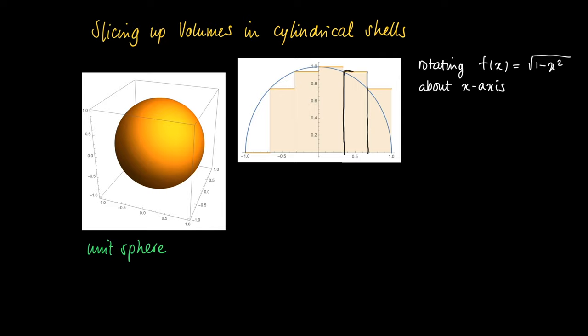We cut up the interval minus 1, 1 in equal pieces. So here we have 2, 4, 6 pieces. So we choose the left endpoint approximation. So we have intervals x i minus 1, x i and we sample points x i star which equals x i minus 1.